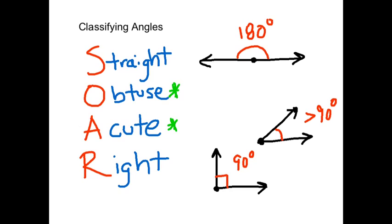And the obtuse angle, then, would have to be greater than 90 degrees. So we could have something that's kind of like this, where the angle is greater than 90 degrees.